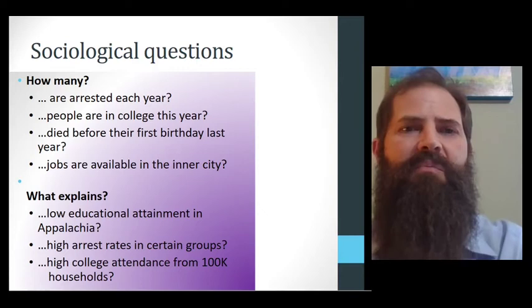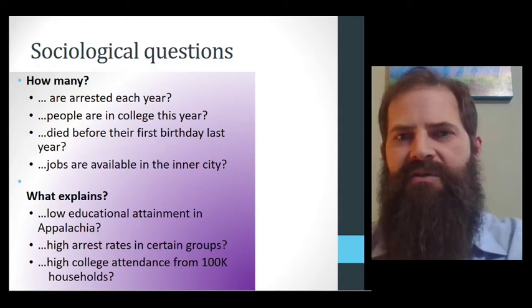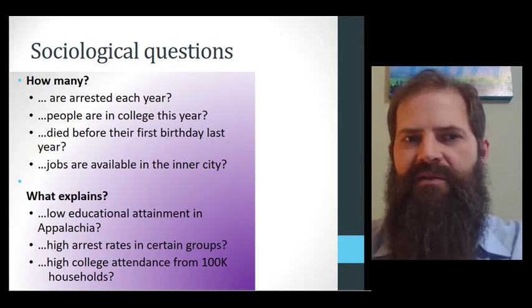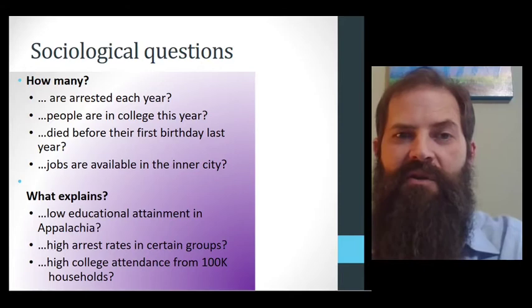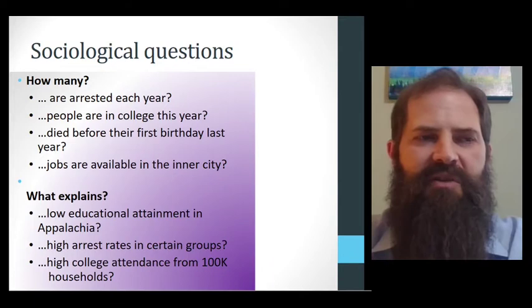I want to start off by giving you some basic sociological questions and start introducing you to the idea of maybe how sociologists might think about things. We often split questions into two categories, trying to either think about how many or how often something might occur, and then a different approach that we try to think about what explains a particular thing. You'll see why we split these up in just a moment.